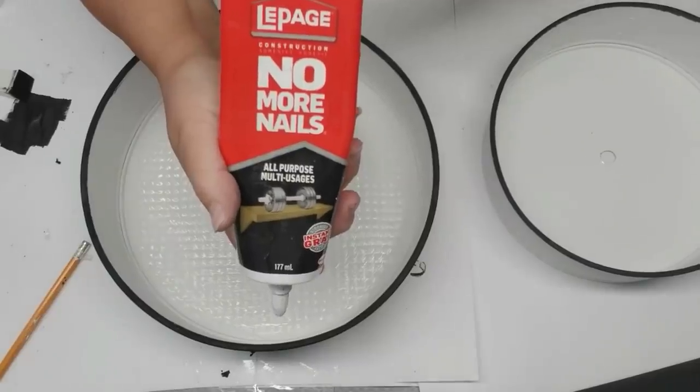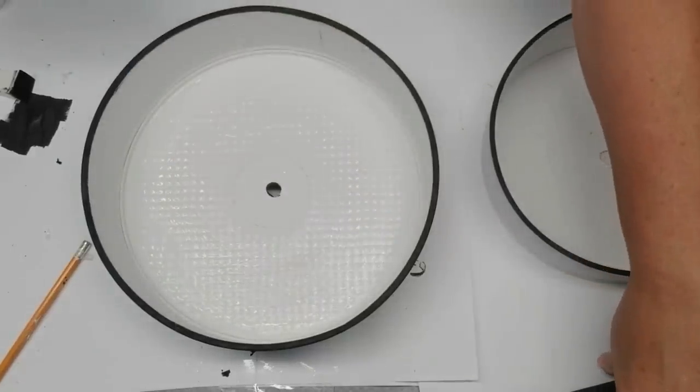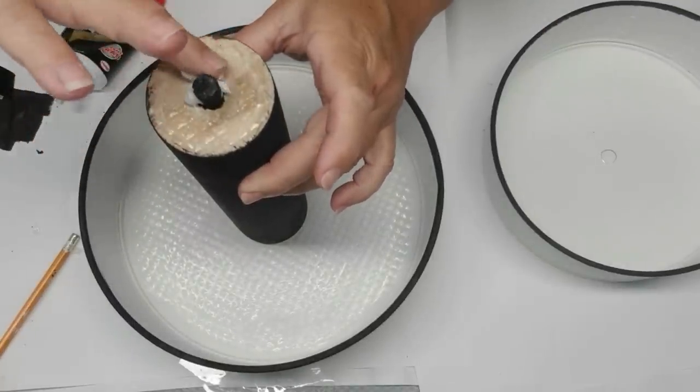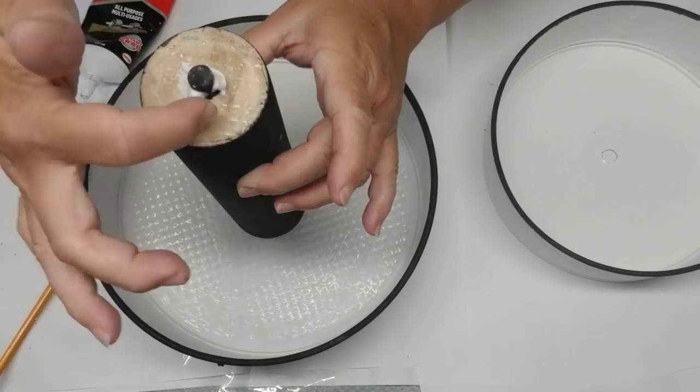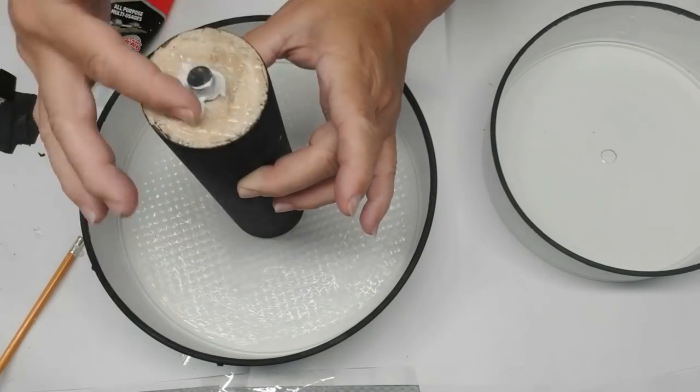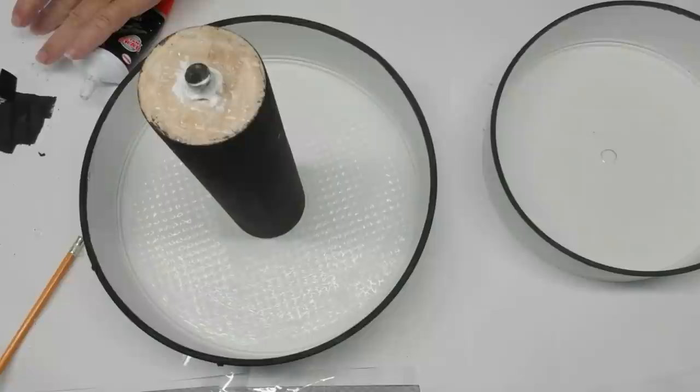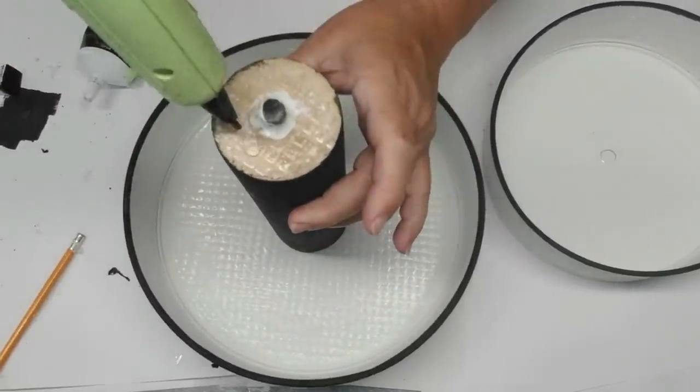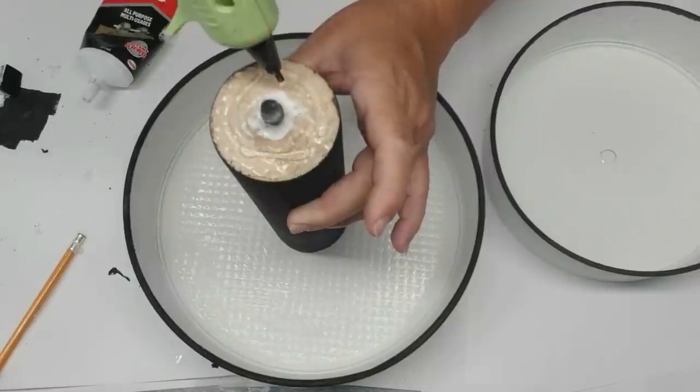I'm using no more nails to attach the two of these together. I'm using my finger to just put a generous amount of the no nails adhesive on the dowel and the rolling pin. Then I'll use some hot glue around the outside edge to just give it that extra hold while the no nails glue is drying.